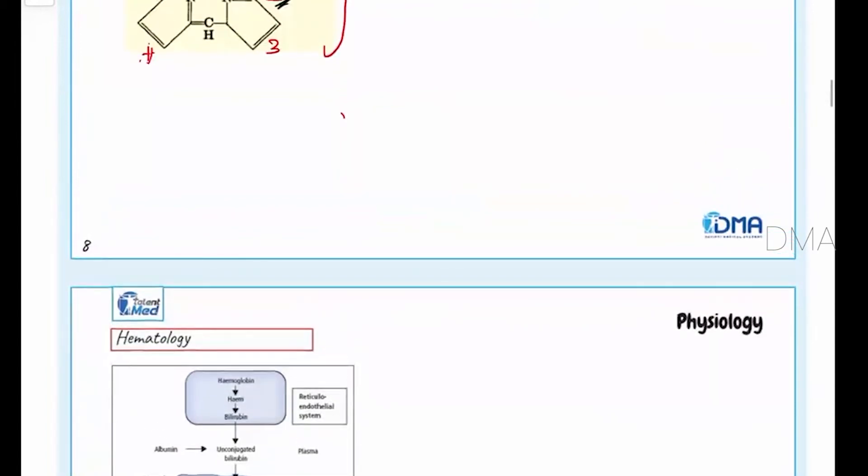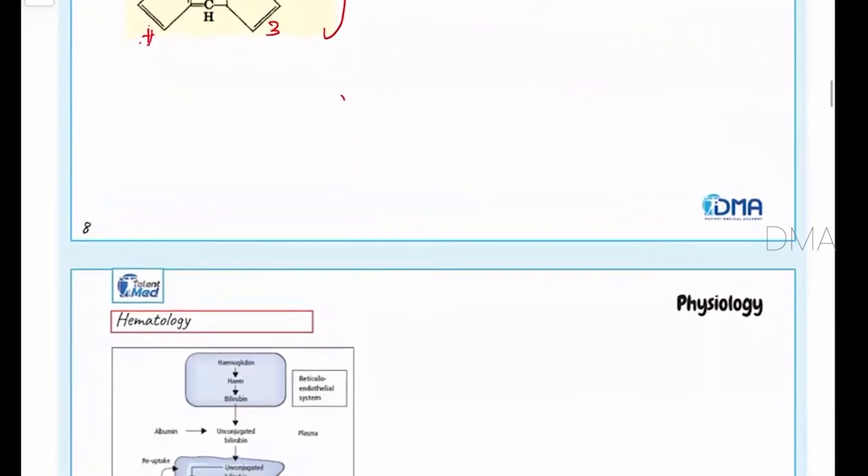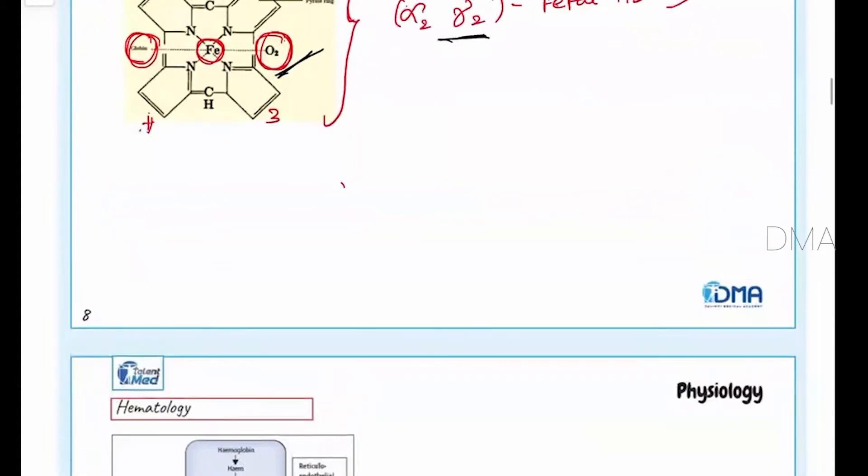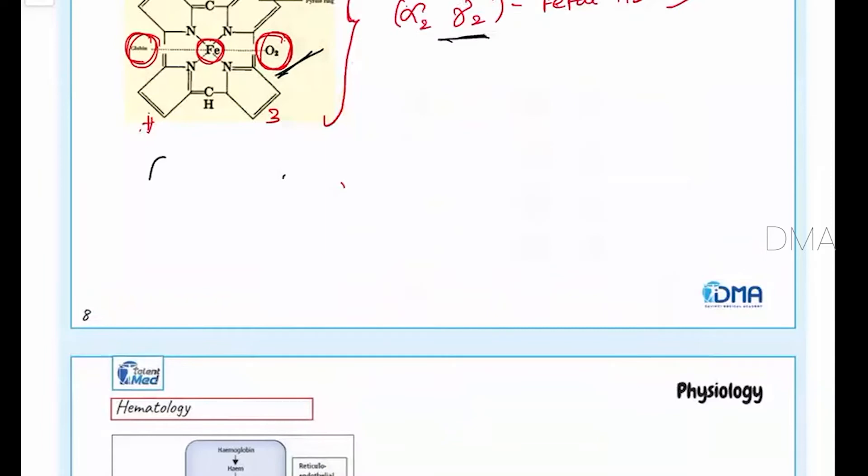And now coming on to the fate of hemoglobin. Once when the RBC lifespan is gone, what is the lifespan of RBC? It is 120 days.